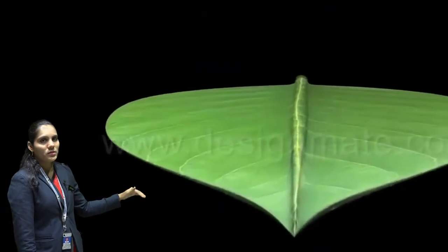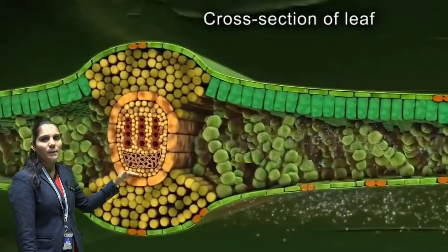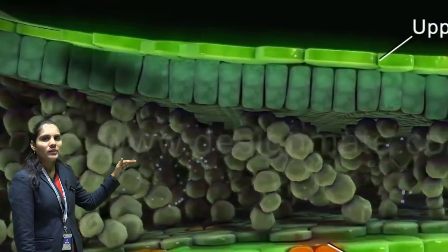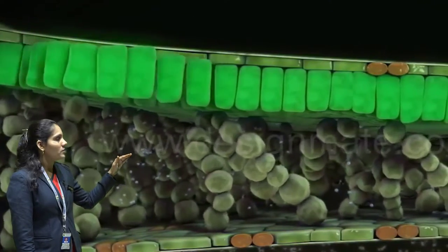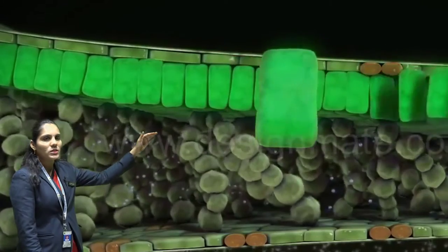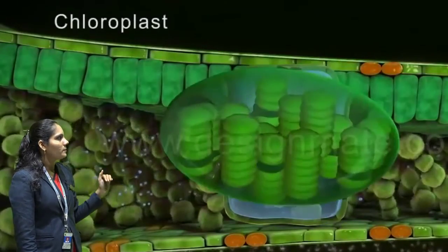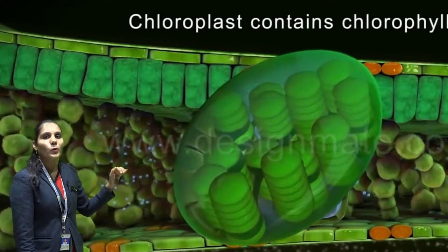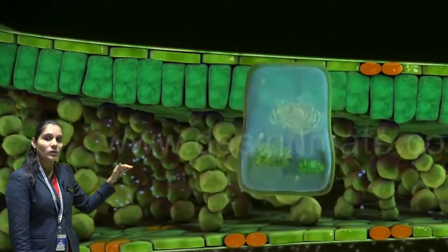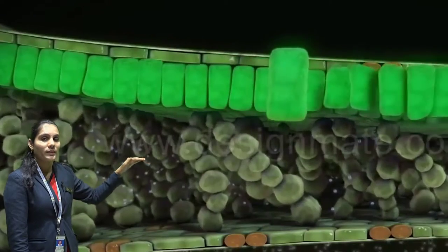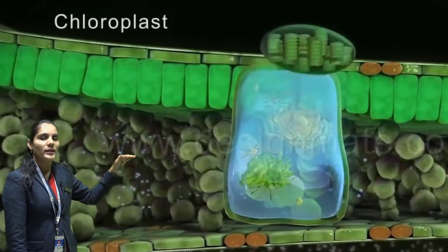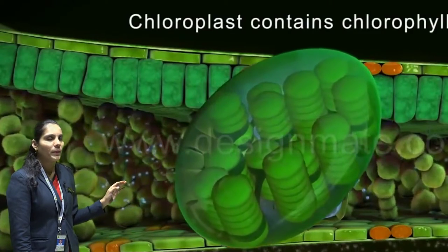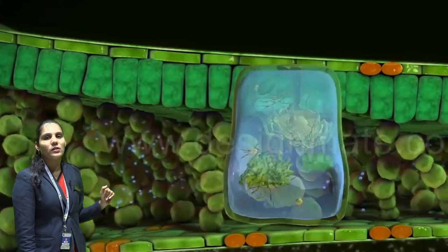The leaf has many layers. The uppermost layer and the downmost layer are made up of flat cells. After that the leaf has specialized cells which are very compactly present just below the upper layer. Inside those specialized cells they have chloroplast cells, and inside the chloroplast they have the chlorophyll pigment. That chlorophyll pigment is green in color, which is why it gives the green color to the plant.